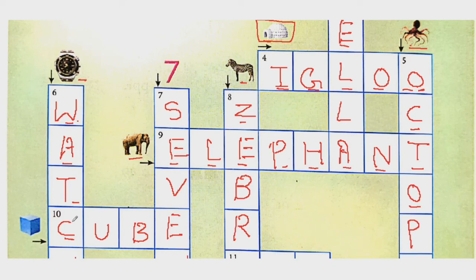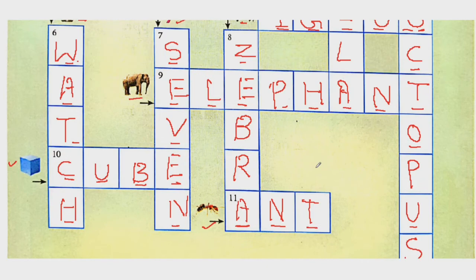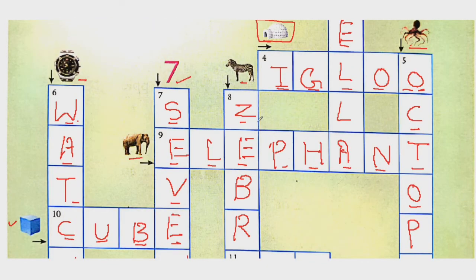Next one is, this is the picture of cube. C-U-B-E, cube. And C is consonant. Now what is this number? This is seven. So S-E-V-E and N, seven. S is consonant. Now the picture is of ant. A-N-T, ant. A is vowel. So students this was the crossword puzzle and we have solved it now.